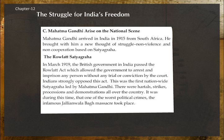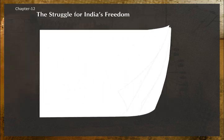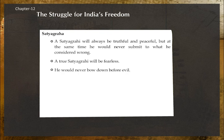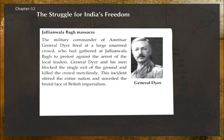It was during this time that the infamous Jallianwala Bagh massacre took place — one of the worst political crimes in history. A Satyagrahi would always be truthful and peaceful, yet would never submit to what he considered wrong, and would never bow before evil. The military commander of Amritsar, General Dyer, fired at a large unarmed crowd gathered at Jallianwala Bagh to protest against the arrest of local leaders. Dyer and his men blocked the single exit and killed the crowd mercilessly, stirring the entire nation and unveiling the brutal face of British imperialism.